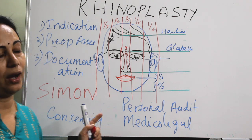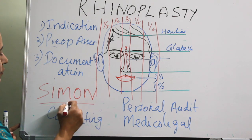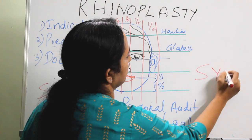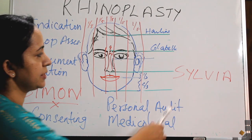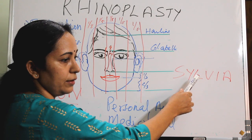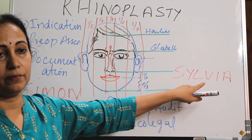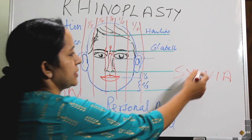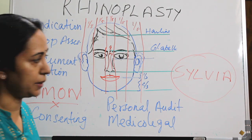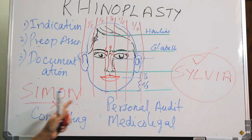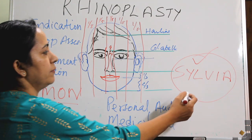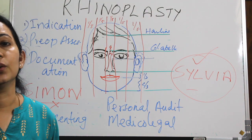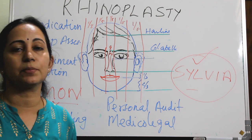The other group is called SYLVIA — Secure, Young, Listening, Verbal contact with the doctor, Intelligent, and Attractive. This type of patient is a very good candidate for rhinoplasty. Patient selection is very important. The dictum is: if you cannot elicit a smile from your patient, don't operate — because if the patient is unhappy even after the operation, you will be in trouble.